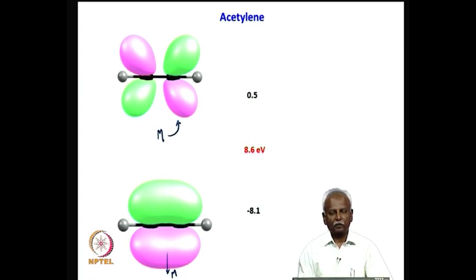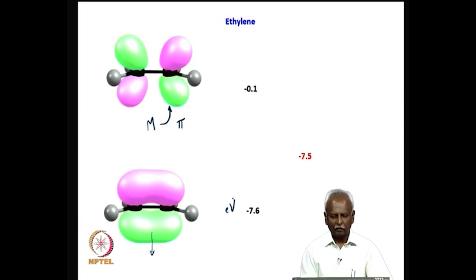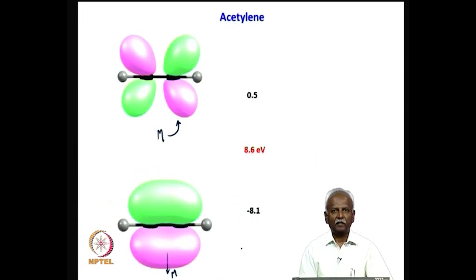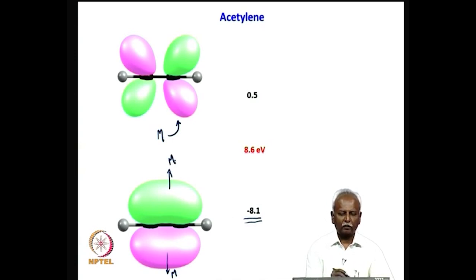The energy of the HOMO is very important and is indicative of how easily it will donate a pair of electrons. For ethylene, this energy was at minus 7.6 electron volts, whereas in the case of acetylene this value has gone down to minus 8.1 electron volts. This indicates that because the electrons are more tightly held by acetylene, they will be less easily donated to the metal. Donation to the metal would occur less readily in the case of acetylene — it is a poorer donor compared to ethylene.